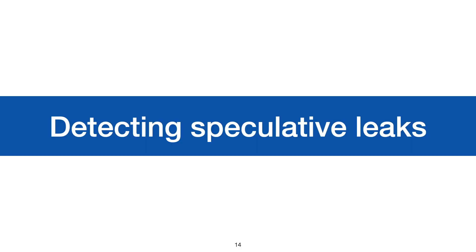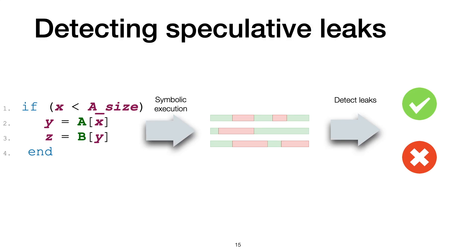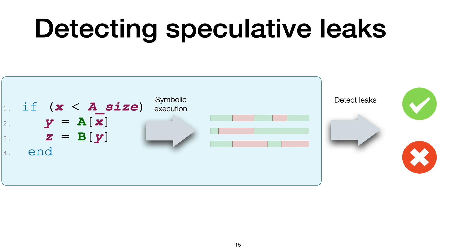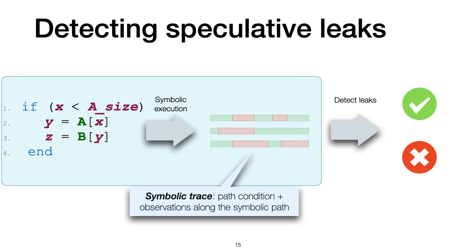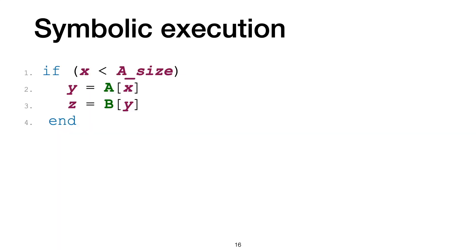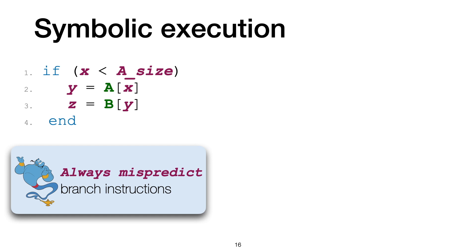Next, let's see how we can automatically detect this kind of leaks. Our approach for detecting speculative leaks works in two steps. First, we symbolically execute the program under the speculative semantics to derive a set of symbolic traces which summarize the program's leakage. Each symbolic trace consists of a path condition and a sequence of observations along the path. As a prediction oracle, we use the always-mispredict oracle which mispredicts the outcome of all branch instructions. When we symbolically execute our program, we start with a fully symbolic state with path condition true.